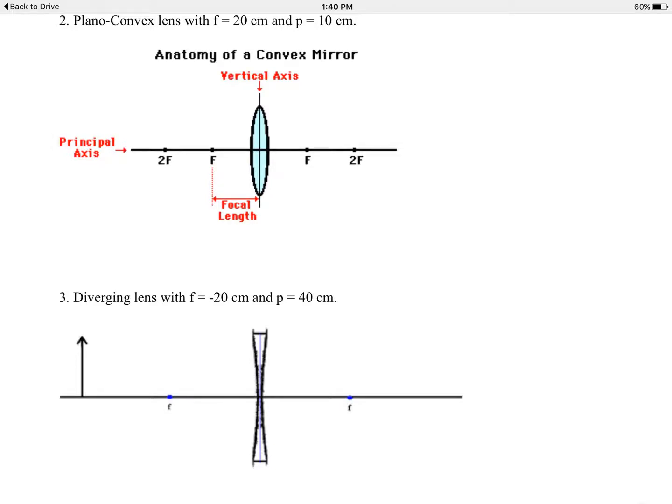In the first case here, problem number 2, we have a plano-convex, actually it's not a plano-convex lens, it's a converging lens. This is mislabeled, not plano, it doesn't really matter, it's a converging lens.